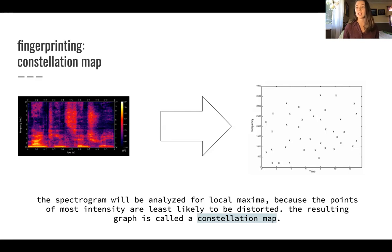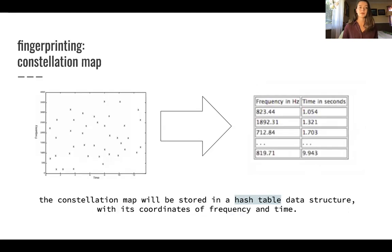That's periods of most intensity for a sound, and we use those because they're least likely to get distorted. Whereas you might think that it would be useful to use local maxima and minima, minima have a higher chance of being distorted by background noise, which is pretty common when you're listening to music in any public space. The constellation map is then stored in a hash table data structure with coordinates of frequency and time. You can see on the y-axis there's frequency.